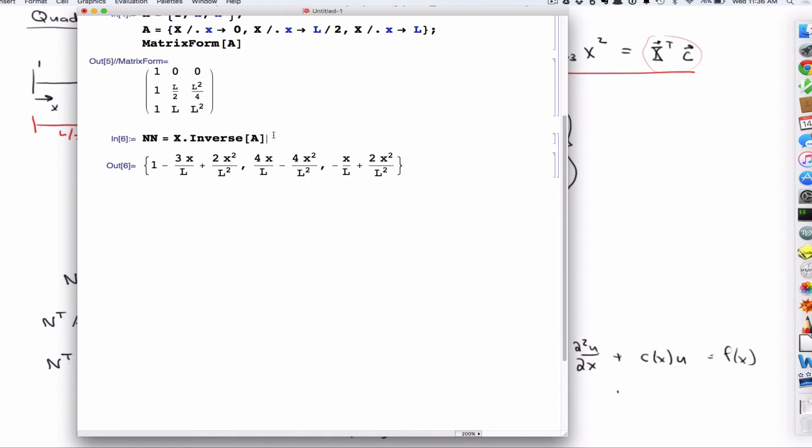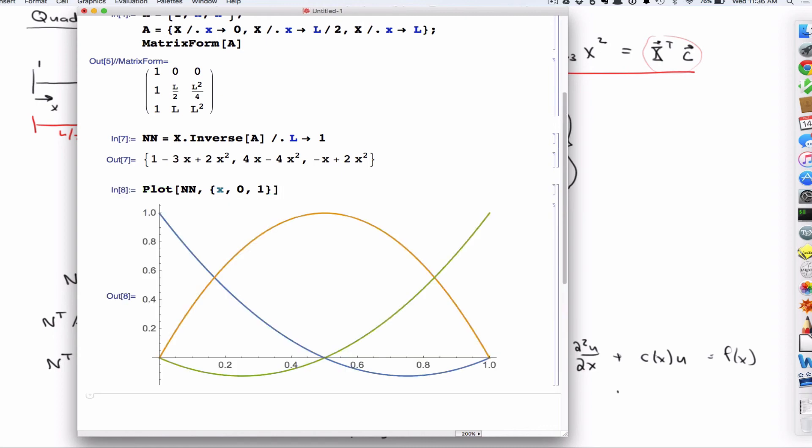I'm going to set L equal to 1, just so I can, then we can plot these guys. Over 0 to 1. So those are the three shape functions for the quadratic element. And you'll notice a couple of things about them. And I'm just going to show it pictorially first, and then we'll look at it, sort of, write it down in terms of math. But the first thing is,